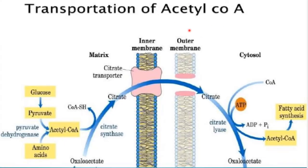The acetyl-CoA present in the mitochondrial matrix cannot directly enter the cytosol. It must first be converted into citrate, which is carried by the citrate transporter present in the mitochondrial inner membrane, then transferred across the outer membrane into the cytosol, where citrate is converted back into acetyl-CoA for use in fatty acid synthesis.